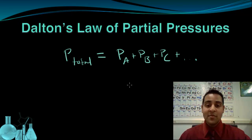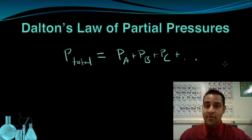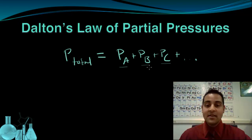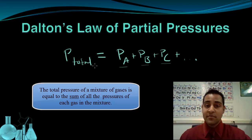So if a mixture of gases was made up of gas A, B, C, D, and so on, the total pressure of that mixture would be equal to the pressure of gas A plus the pressure of gas B plus the pressure of gas C, and so forth. We call these individual pressures the partial pressures. P_A is the partial pressure due to gas A; P_B is the partial pressure due to gas B. This is Dalton's Law of Partial Pressures — I can add up all the partial pressures to get the total pressure of the mixture.